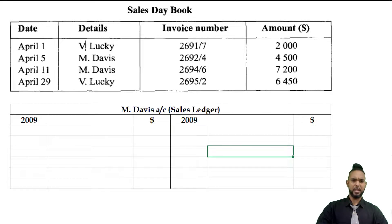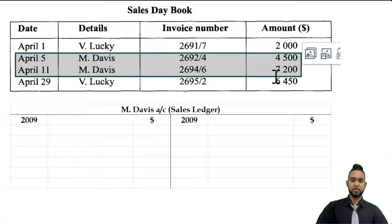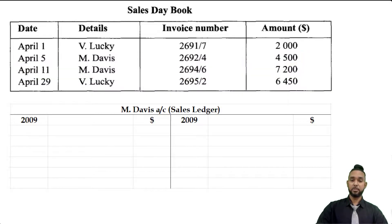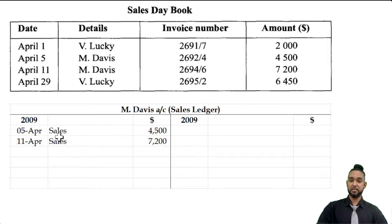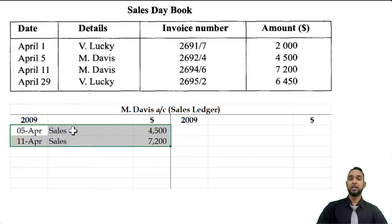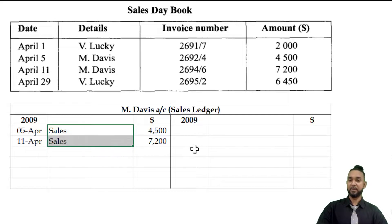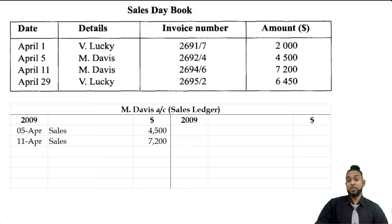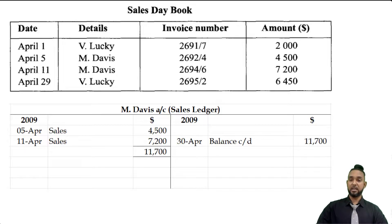In M Davis's account we have two credit sales — one on the 5th and one on the 11th. Just as we did with V Lucky, the two amounts go on the debit side of M Davis's account, with 'sales' as the details indicating the other account affected. These are debits to M Davis's account, not to the sales account. With no other entries, we total up the debit side, put that as the balance carried down on the credit side, and bring it down on the debit side.